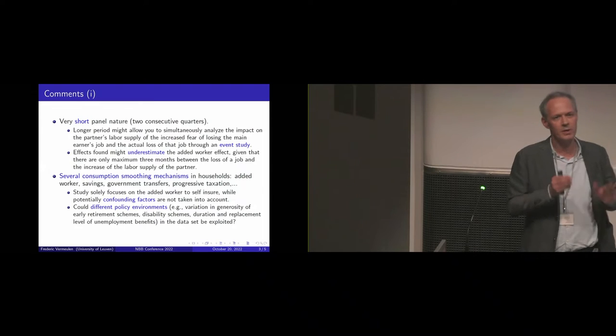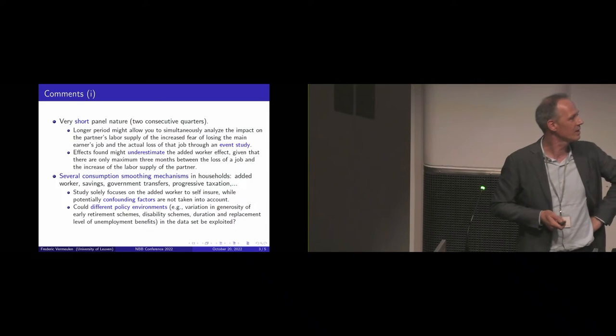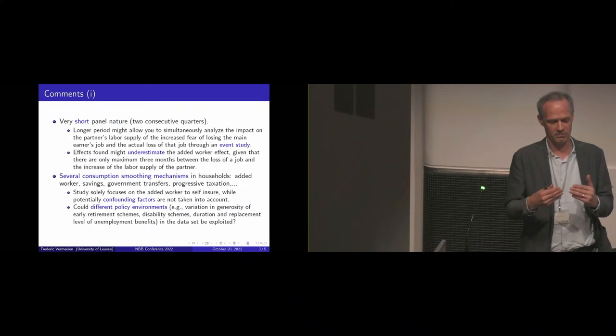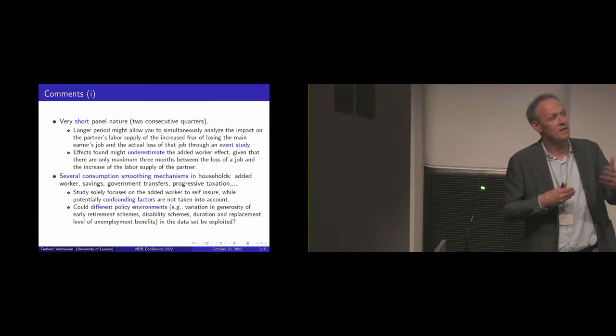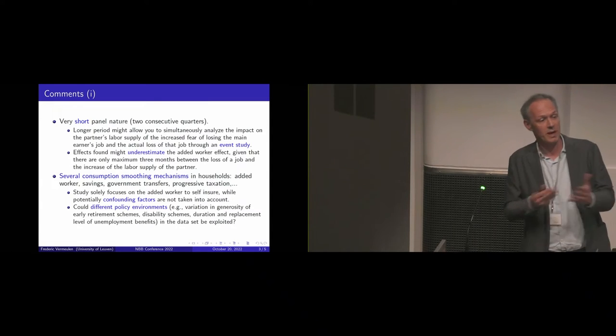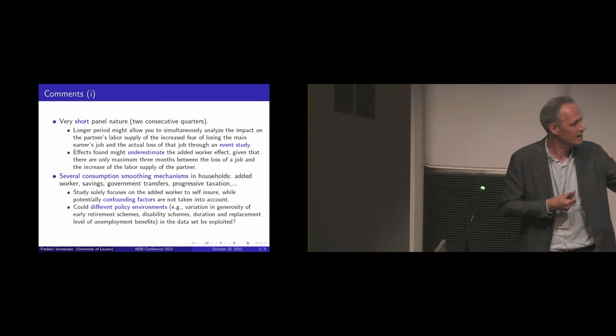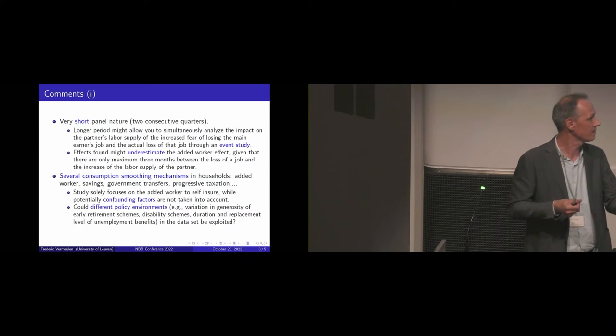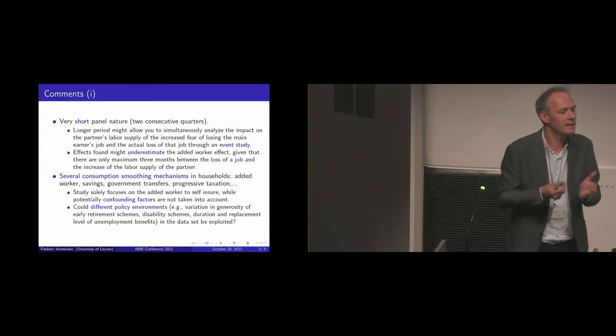Suppose you also have a longer panel in terms of numbers of observations, then you could even do kind of an event study in the sense that you start in a given situation with given labour supply of both partners. Then there's an economic crisis. Some households may be developing a fear of losing a job. They might already interact. And then in later panels, in later observations, you will see whether or not the risk occurred, and whether there's an additional effect then when that partner effectively loses the job. But once again this is beyond your control. You cannot do that with the data you have at hand.